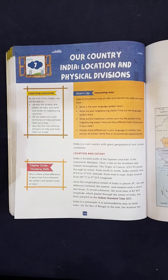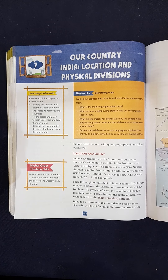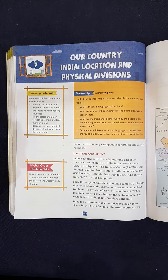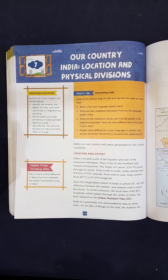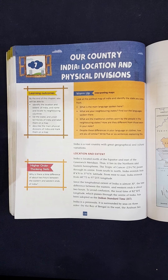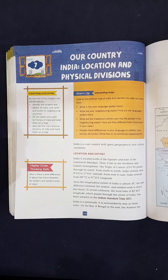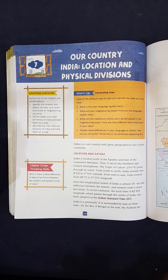While locating India, our country where we live, India is located north of the equator and east of the Greenwich meridian. We know that the globe is the representative shape of the earth, in which we divide the earth into mainly two parts: the northern hemisphere and the southern hemisphere.